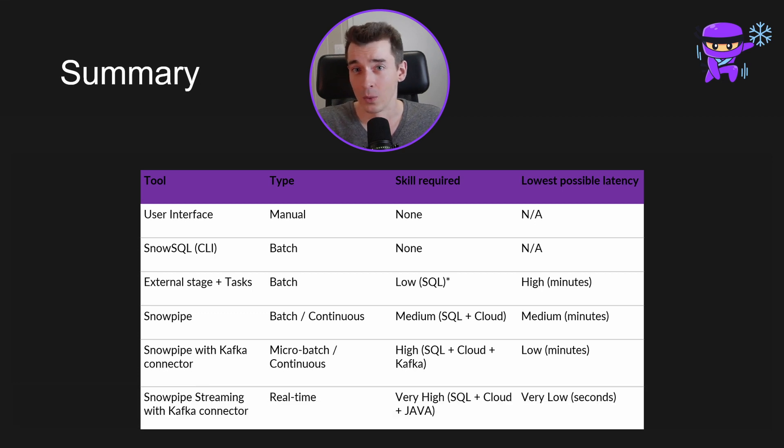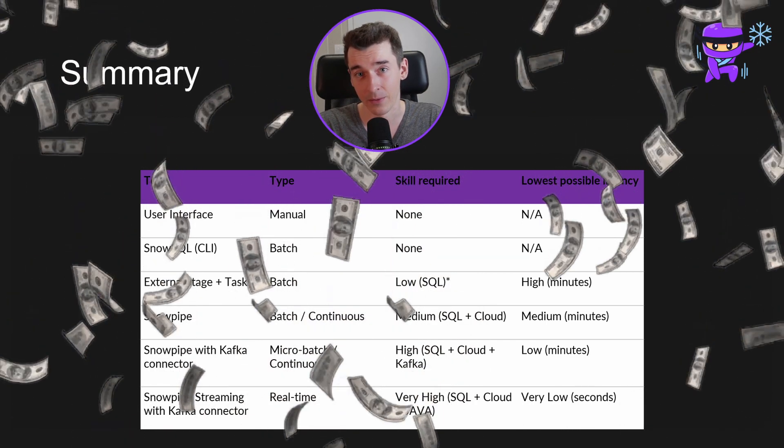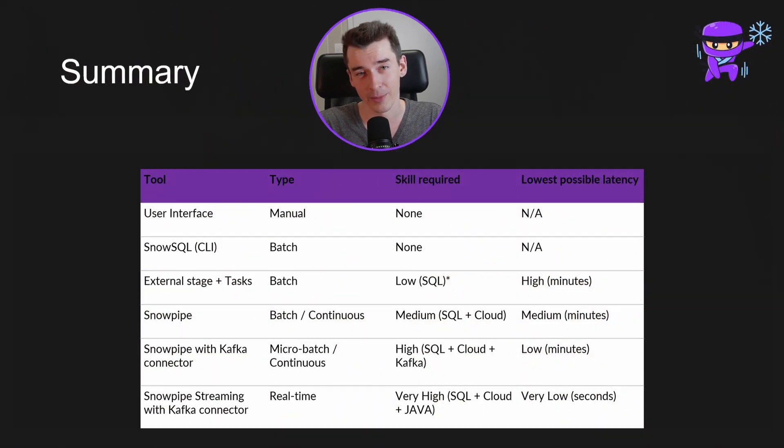Snowpipe streaming is on one hand the hardest option to configure, but on the other hand it offers real-time data loading in the most cost-efficient way. Costs can be very tricky, so read the documentation carefully to not miss anything. Taking all of this into consideration, there is no one-size-fits-all approach, so it is important to understand the differences in order to effectively address your requirements. While I've shown you six different ways to load data into Snowflake, these are definitely not all — you can always use external applications to simplify your workflow. Let me know in the comments which other tools you use, and hit subscribe if you don't want to miss my next videos. Thanks for watching!